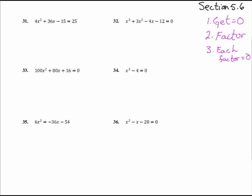So let's start with number 31 right here. First step, get it equal to zero. So we got 4x² + 36x - 15 with a minus 25 to get it equal to zero. That's minus 40 equals zero. Step number one, check.